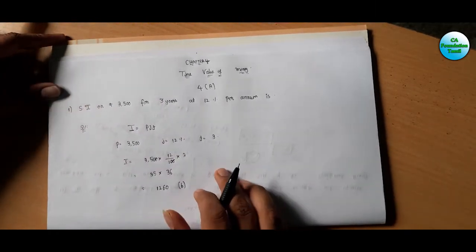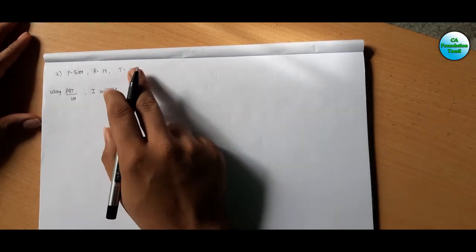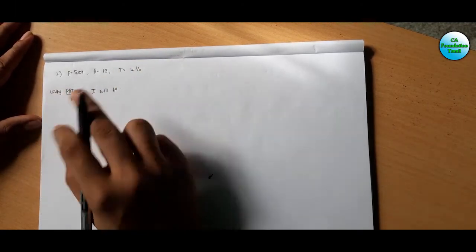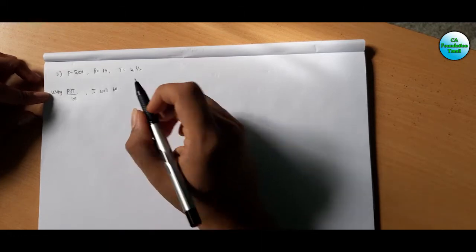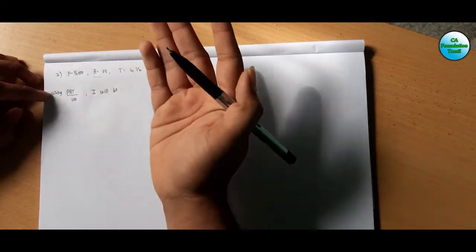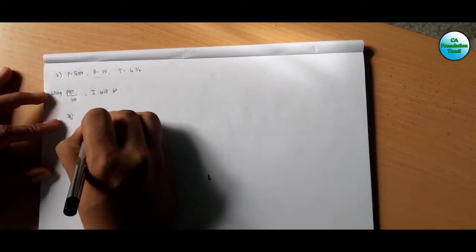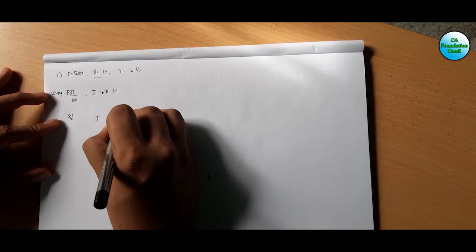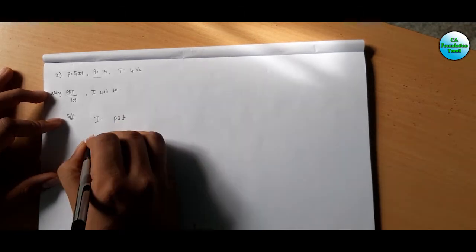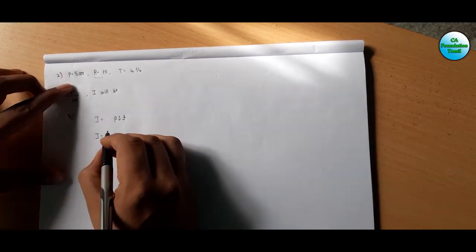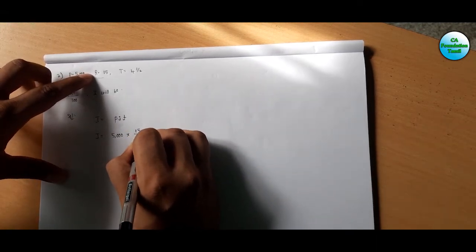For the second sum: P = 5,000, rate = 50, T = 4. Using the formula I = P × r × T divided by 100, where r is the rate of interest. We apply I = P × i × T, with P = 5,000.